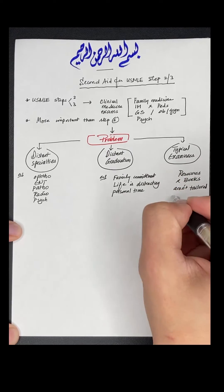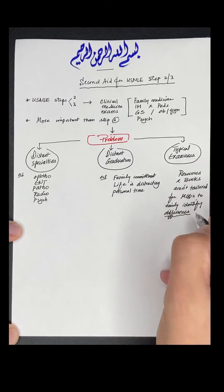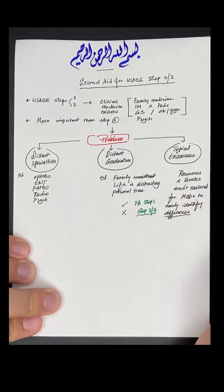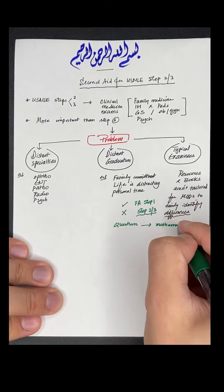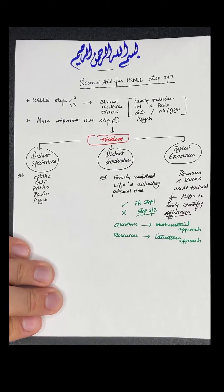Because unlike First Aid for Step 1, there aren't any Step 2 or 3 MCQ-tailored resources, because the real exam questions all follow a mathematical approach of thinking while the available resources have more of a literature approach of writing.